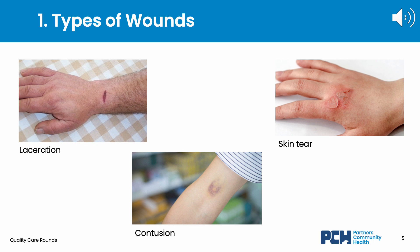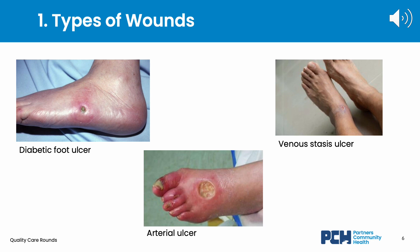Now these slides are not meant to create distress for those watching, but instead to help identify these five types of wounds in our residents and distinguish their features from each other. On this slide, we see the three types of injury wounds previously defined, which include a laceration or cut on the forearm in the top left picture, a skin tear with the exposed outer layer flap that is still semi-attached in the top right photo, and a contusion or bruise in the bottom image where we see bleeding underneath the skin without skin opening. On the next slide, we see a diabetic foot ulcer in the top left, a venous stasis ulcer in the top right, and a deep punched-out arterial ulcer in the bottom image.